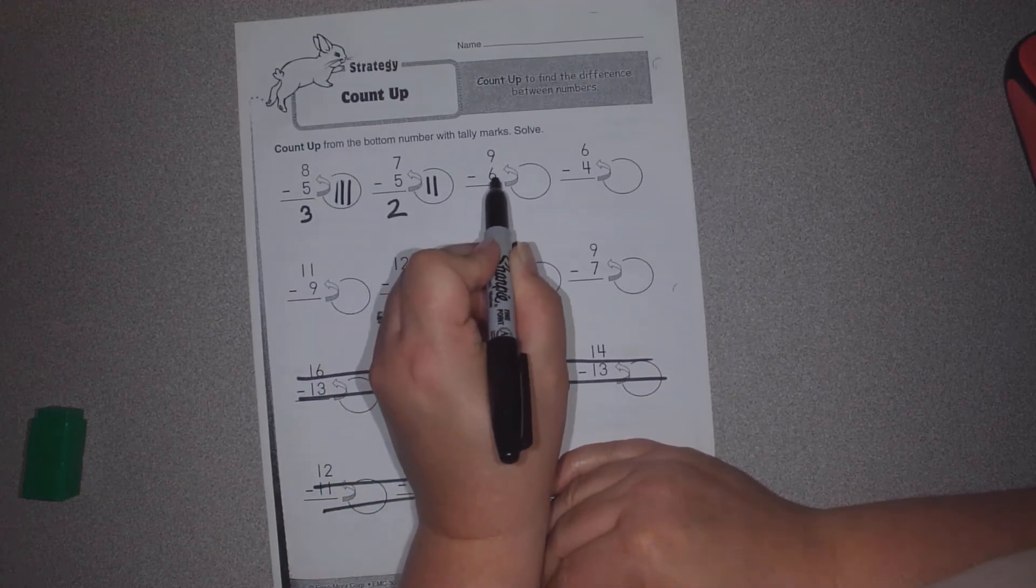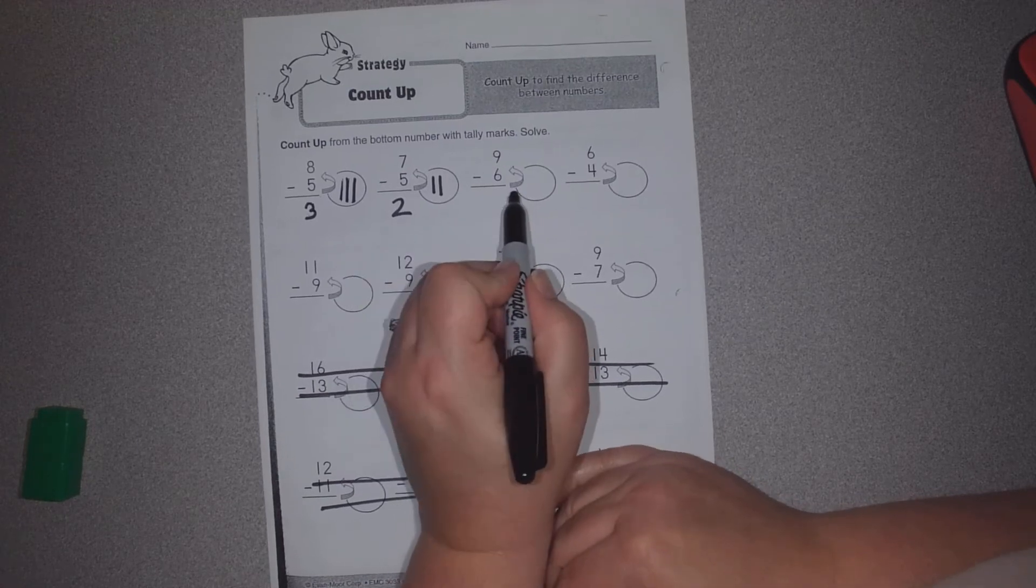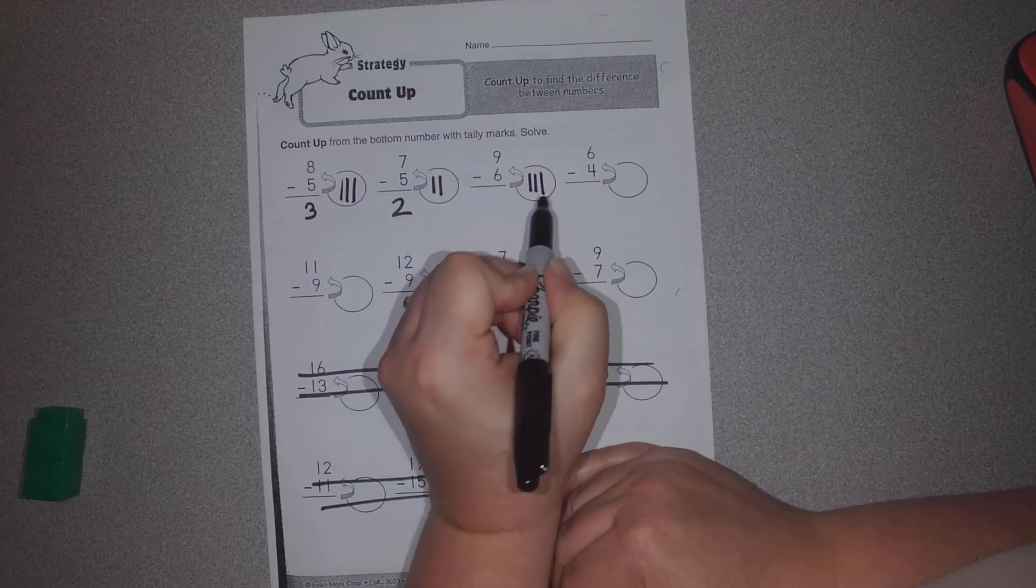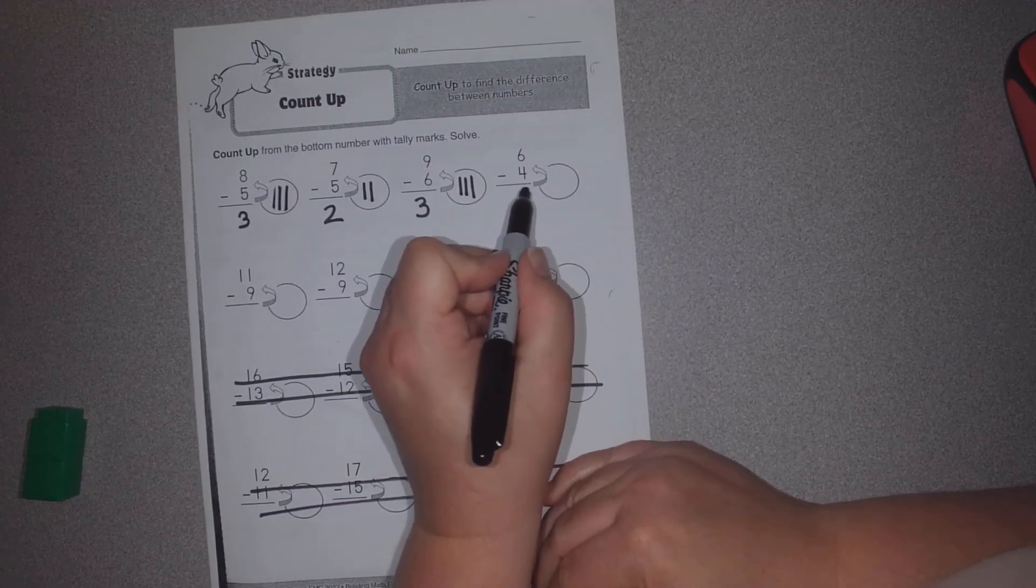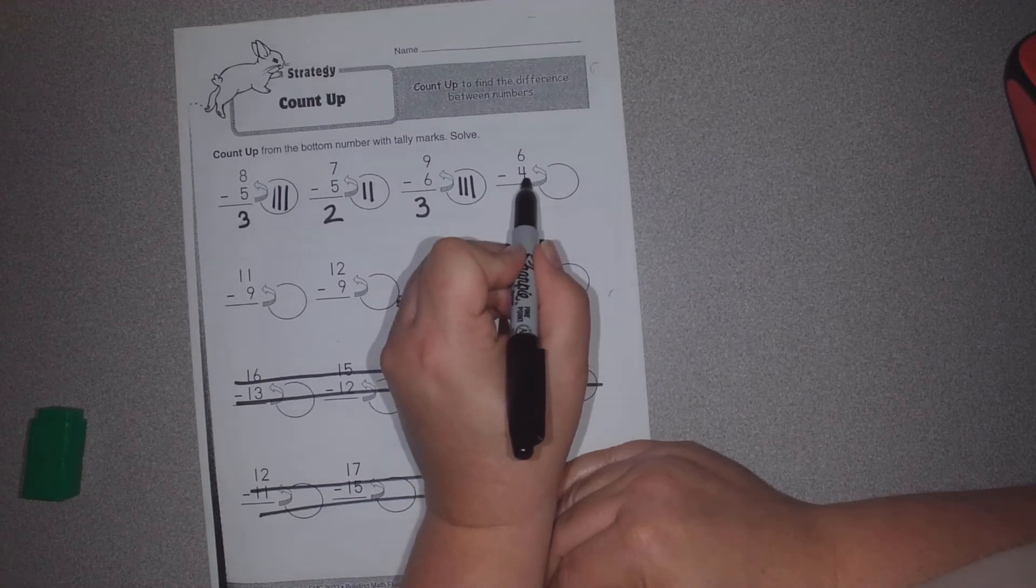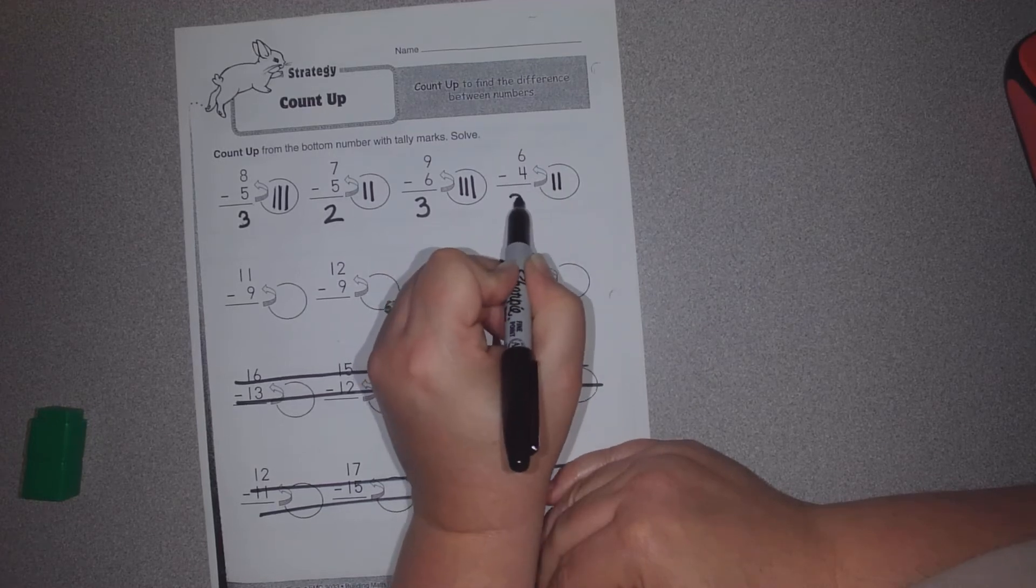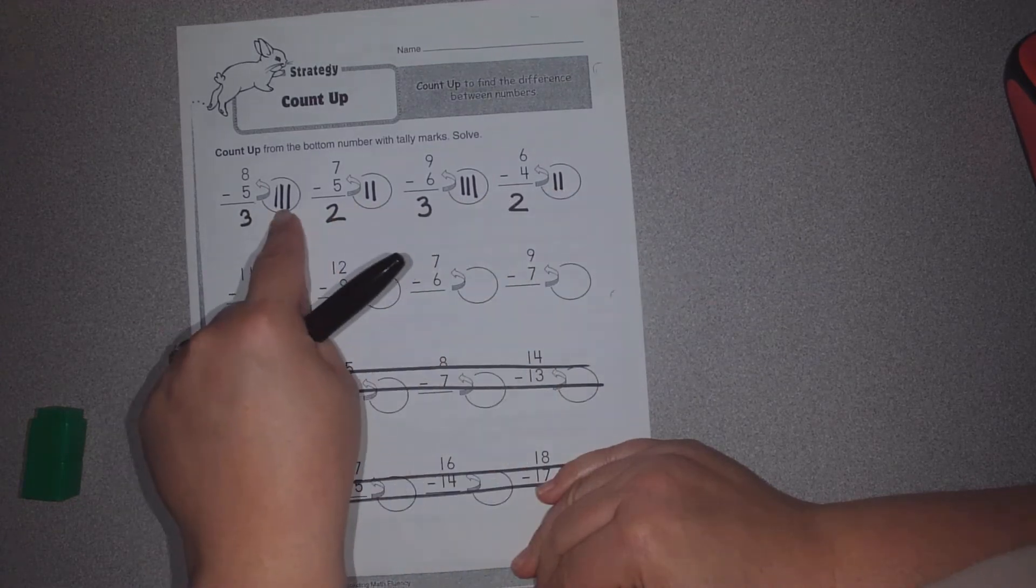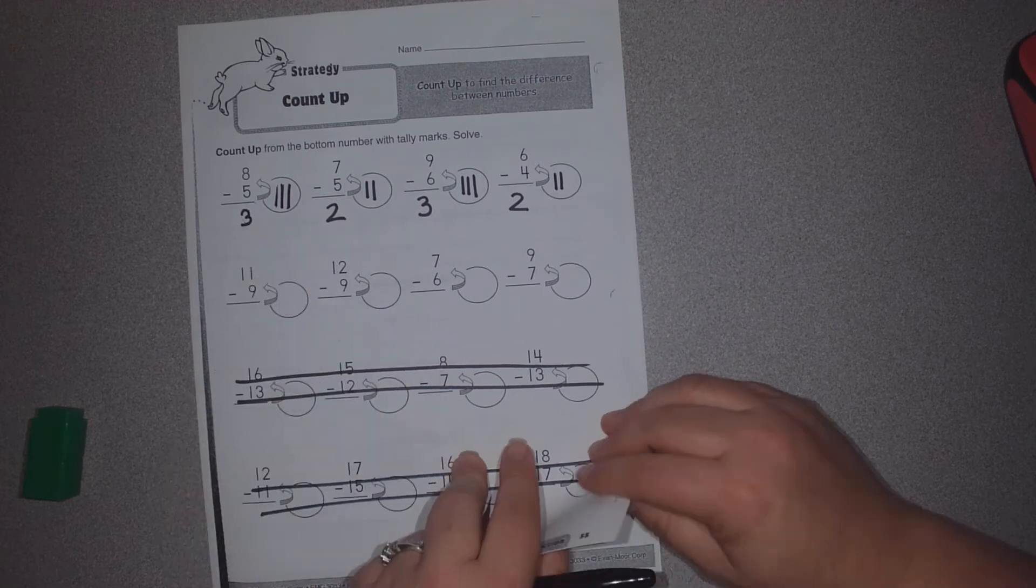Okay, 9 minus 6. Instead of counting back, I can count up to find the difference. Hold the 6. 7, 8, 9. I made 3 jumps. I'll show you this one more. 6 minus 4. Let's find the difference. I'm going to start at the 4 and count up. Hold the 4. 5, 6. 2 jumps. So on this page, we need to record with tally marks how many jumps we're making. And record the answer of how many tally marks you used.